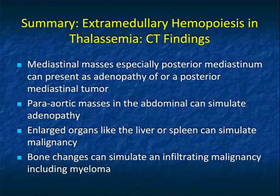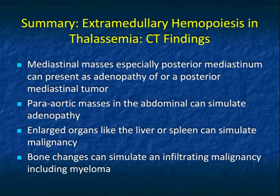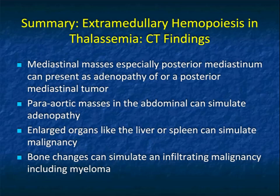Let me review the key points: Extramedullary hematopoiesis in thalassemia can present as mediastinal masses simulating other pathologies. Peritoneal masses in the abdominal areas can simulate adenopathy. Enlarged organs like the liver or spleen can simulate malignancy when it's simply extramedullary hematopoiesis causing infiltration. The bony changes can simulate many other pathologies including malignancies. Extramedullary hematopoiesis is very easy to recognize when you think about thalassemia, but you can see it with many other conditions. I hope I've given you some good information — hope you find it helpful.